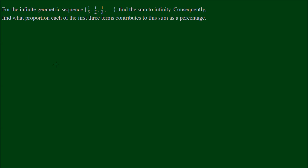For the first question, for the infinite geometric sequence: one-half, one-quarter, one-eighth, find the sum to infinity and consequently find what proportion each of the first three terms contributes to this sum as a percentage. By inspection, the common ratio r is equal to one-half, because one-half times one-half is one-quarter, and one-quarter times one-half equals one-eighth. The first term a equals one-half.